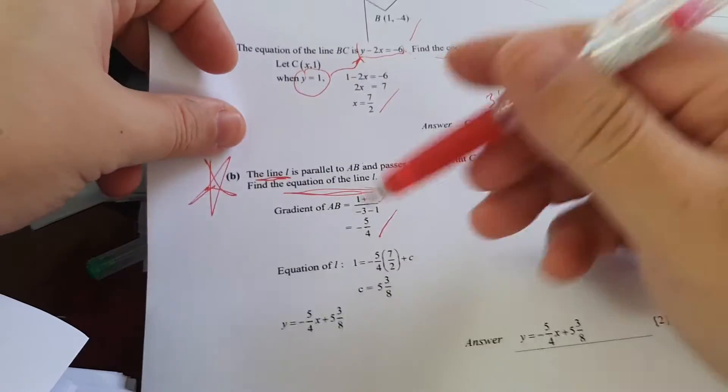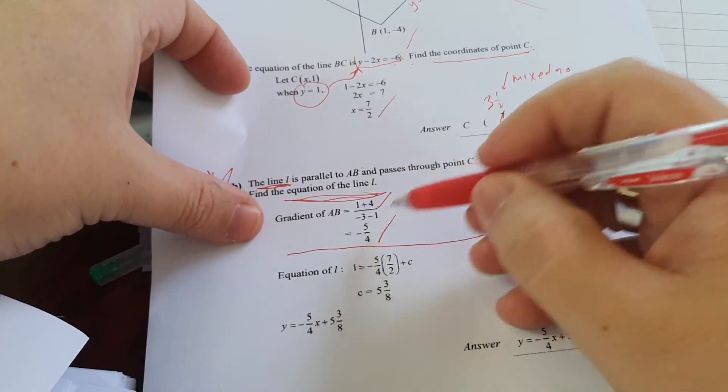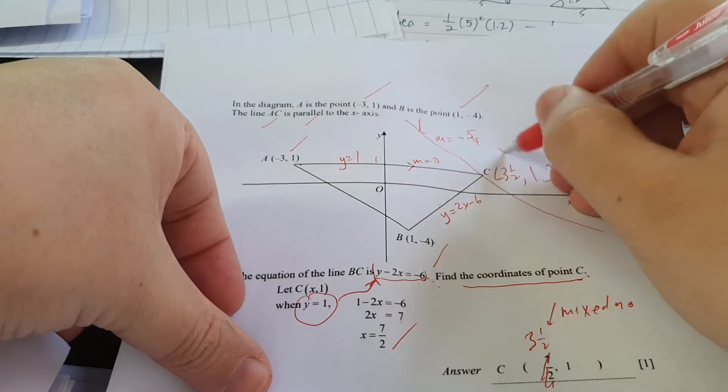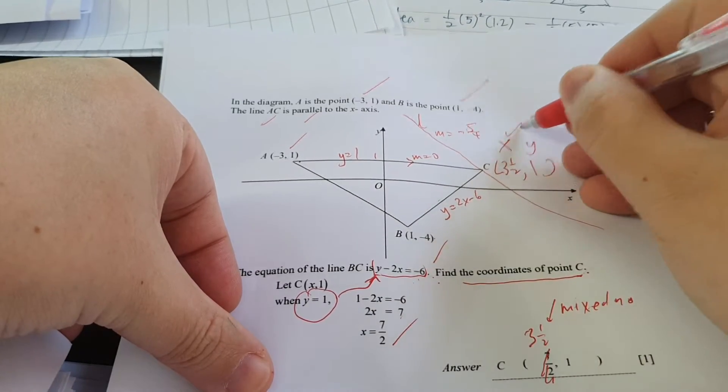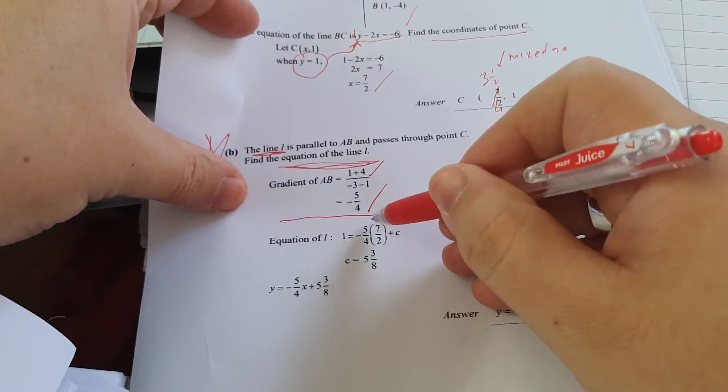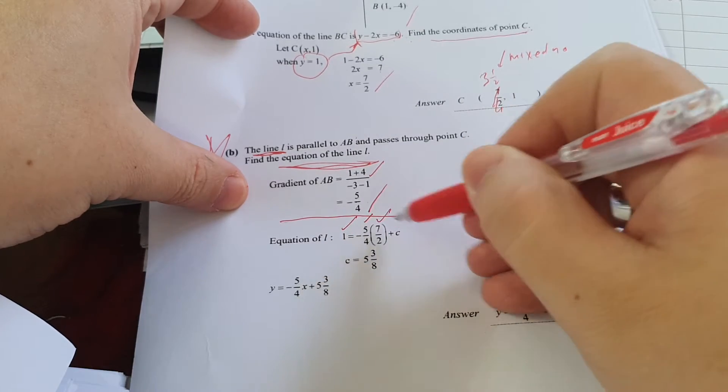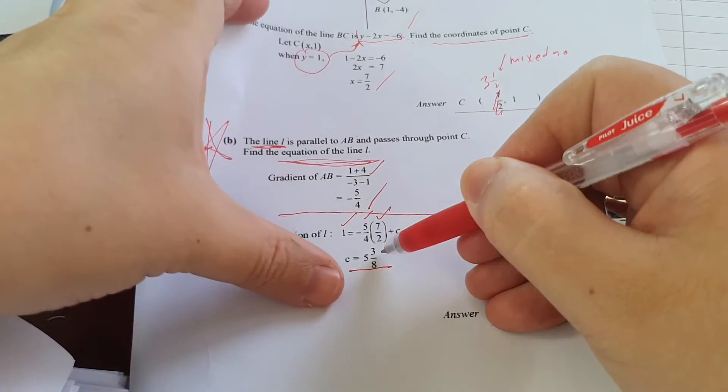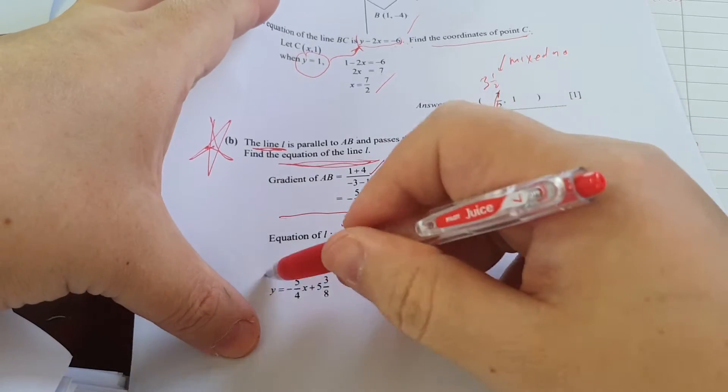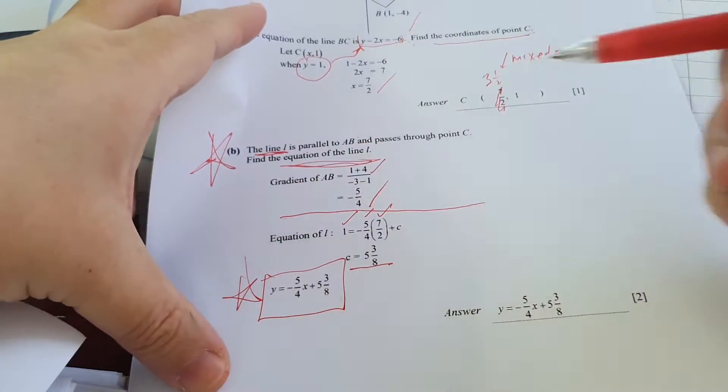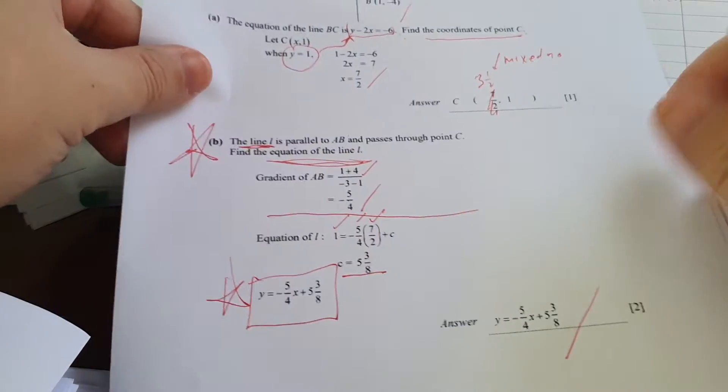So if the gradient of this line is minus 5 over 4, the gradient of this line must be minus 5 over 4 also. Why? Because they are parallel. And it makes sense because this is negative gradient, sloping downwards. Now we are done with this thing. And because it passes through this point, so I have the X, the Y, the M. I can find the C. And I told you it cannot leave your answer like that. You must write the equation. This is the final answer. So this is a typical question.